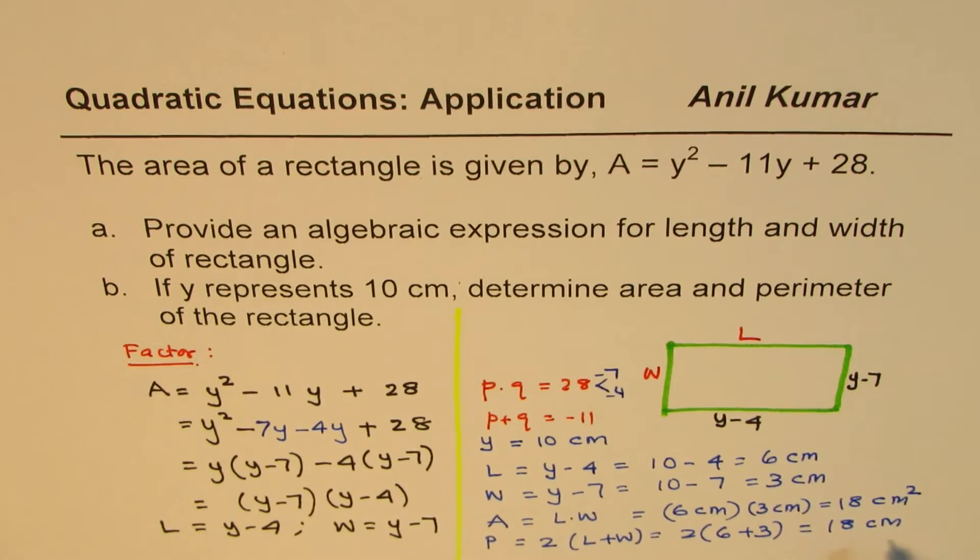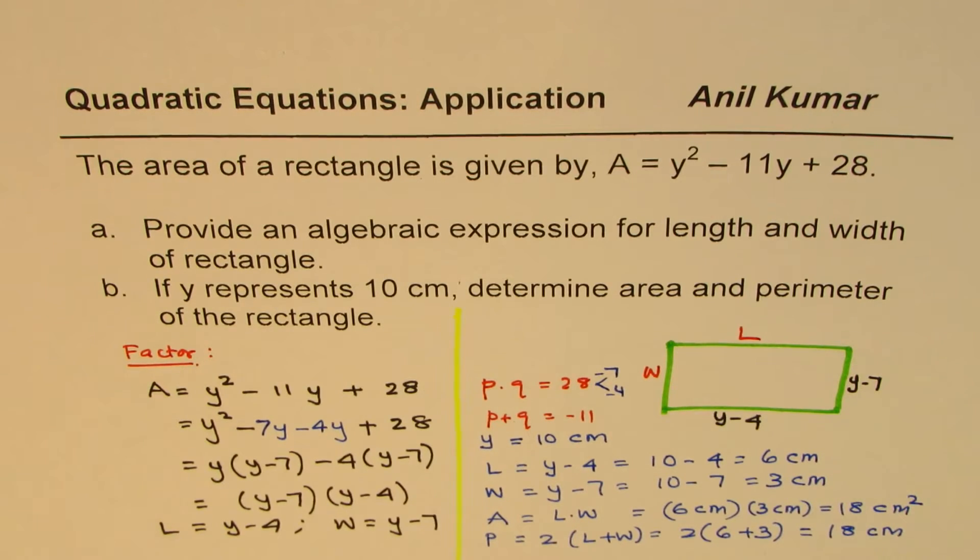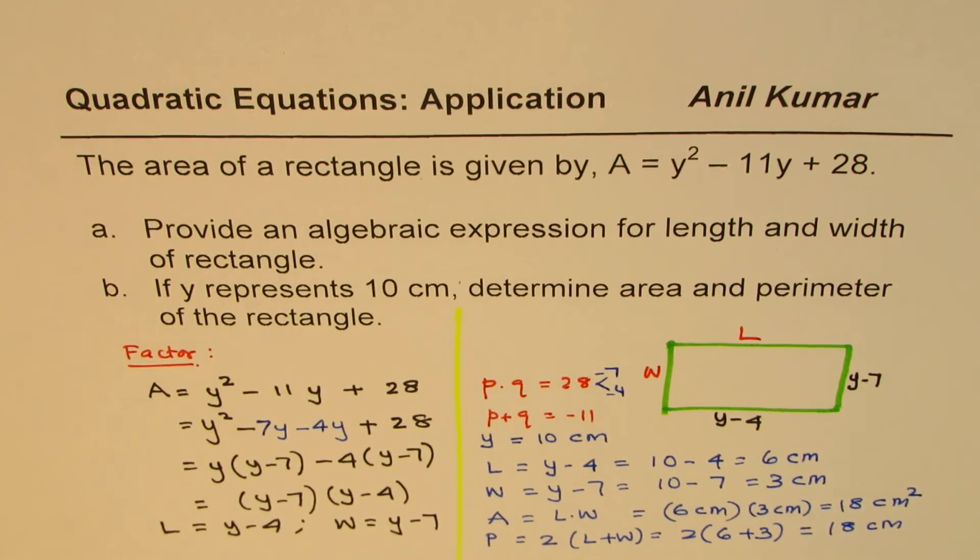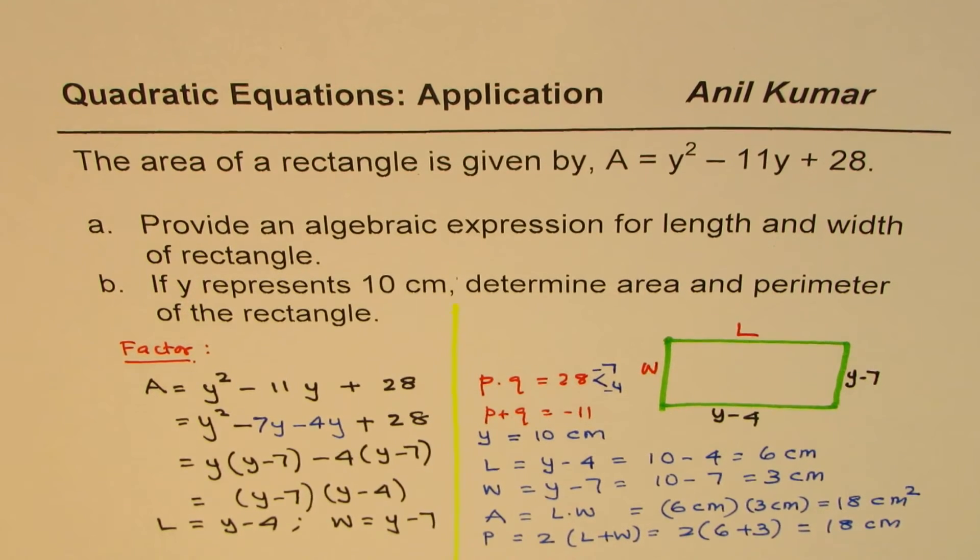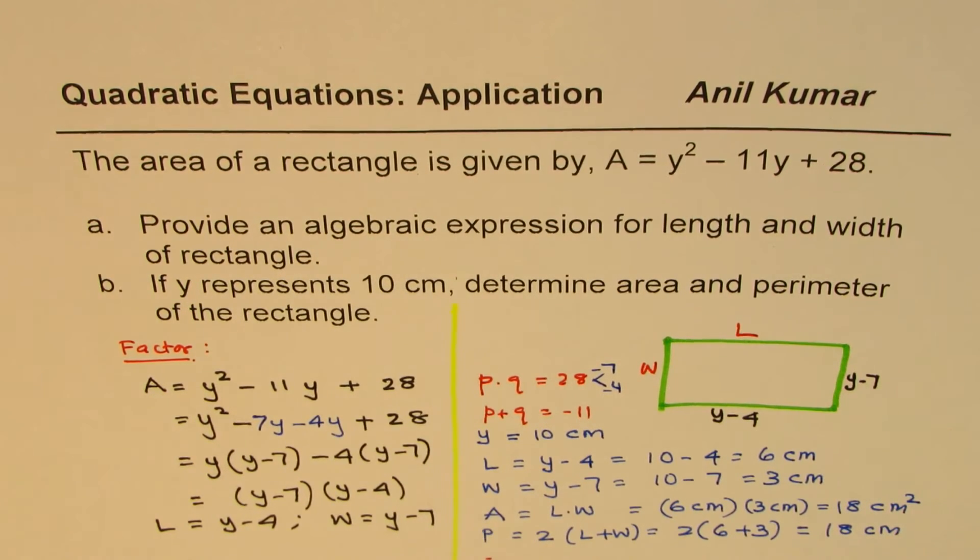Well, you find both perimeter and area to be the same, except for the units. Anyway, so this example helps you to understand how we can represent sides or the dimensions of a rectangle with algebraic expressions.